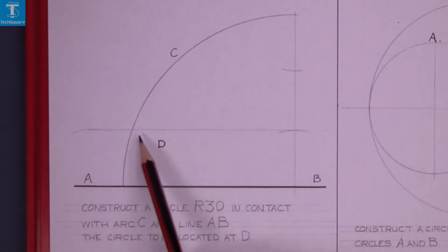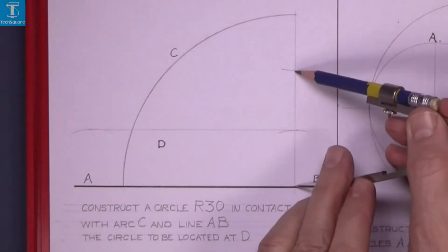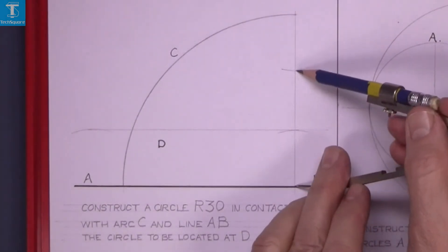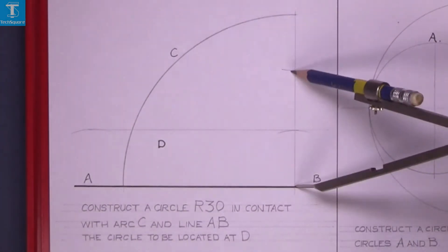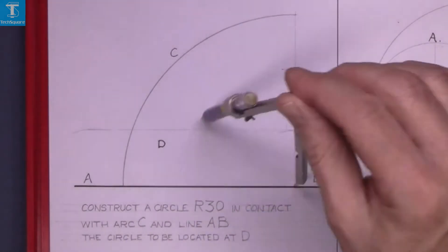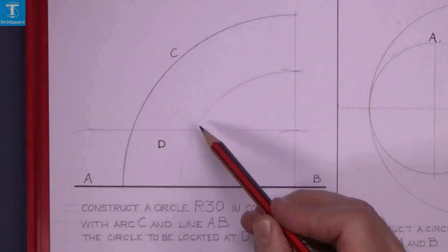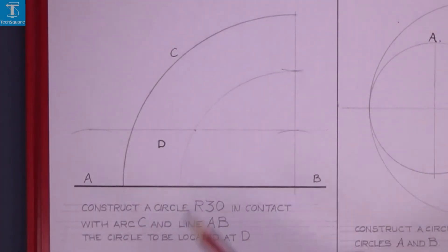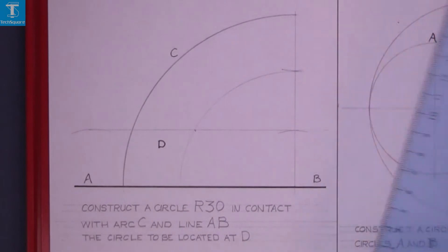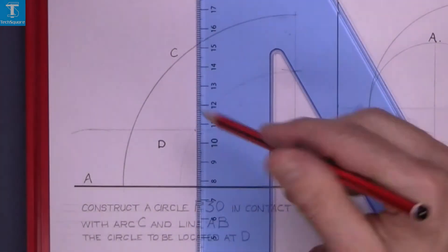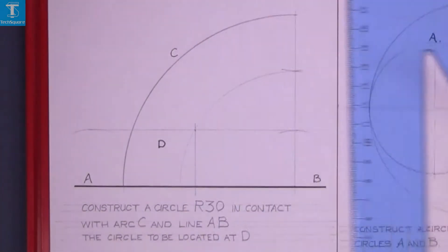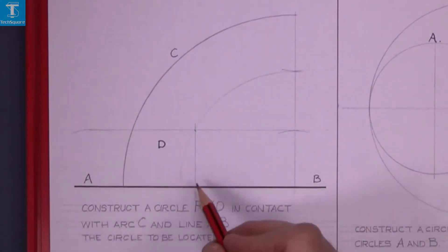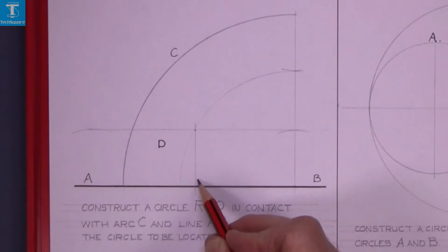With the center at the bottom, describe an arc around and where the arc intersects the line, that's the center of the new circle. The point of contact is found by drawing straight down.